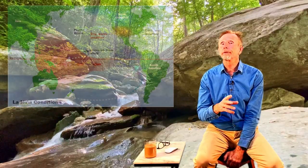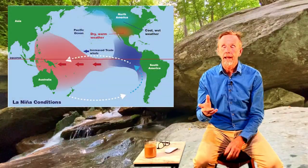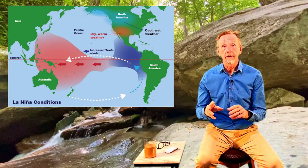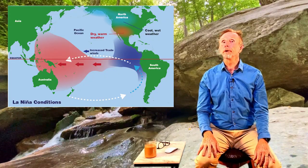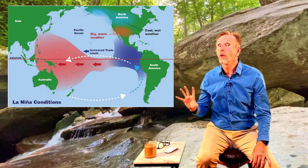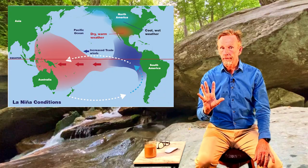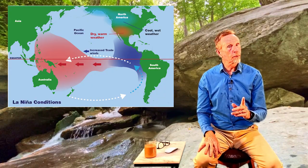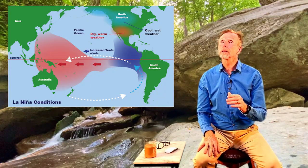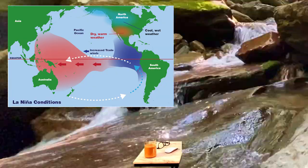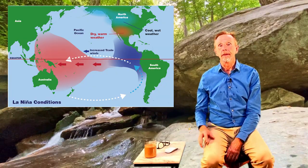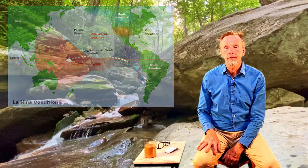The flip side of El Niño is La Niña. In some years we have normal conditions; in some years we have El Niño, the warming of the Pacific; and in other years we can have La Niña, which is a cooler-than-usual period in the Pacific.